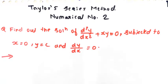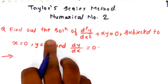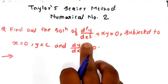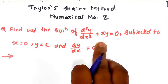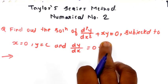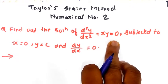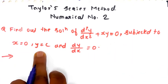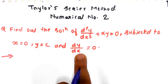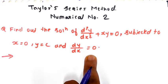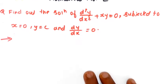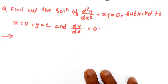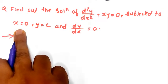Hello everyone. In this video we are going to see a second numerical for the Taylor series method. The problem is: find the solution of d²y/dx² + xy = 0, subjected to x = 0, y = c, and dy/dx = 0. We have to find the value of y at x = 0.